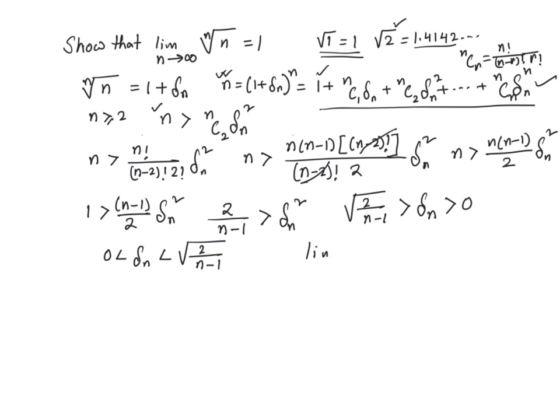However, the limit as n approaches infinity of square root of 2 over n minus 1 is nothing but 0. That tells us that the limit as n approaches infinity of delta sub n is equal to 0 from this relation.